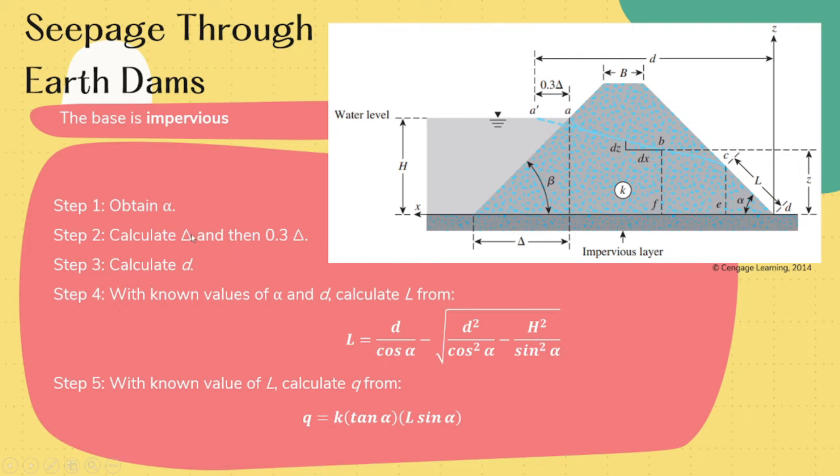Next is to calculate delta and 0.3 delta. Third is to calculate the distance d. So this distance from the toe until the 0.3 delta point. And then when the values of alpha and d are already known, we can calculate the length L.